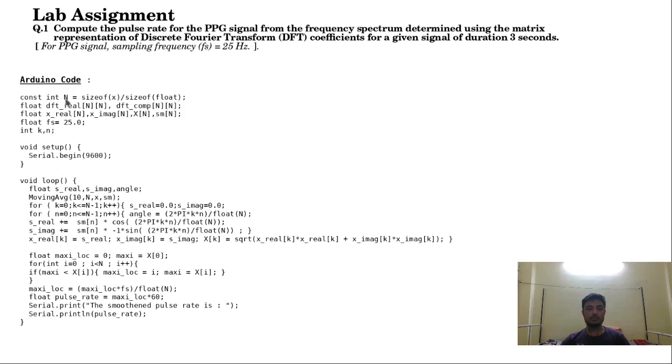Initially the x variable contains the data and capital N represents the total number of samples, that is 75. FS is the sampling frequency, 25 hertz, and K and N are as mentioned before. The baud rate is 9600 which is mentioned in the setup part, and in the loop part we have the following procedure or algorithm to calculate the DFTs and then to measure the pulse rate from those DFT coefficients.